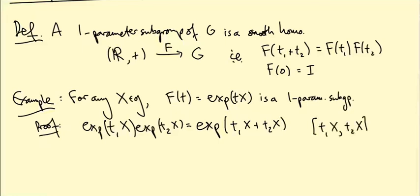T1, T2 are just numbers, we can just take them out of this Lie bracket by linearity, and so we just get T1, T2, X bracket X, which is 0.